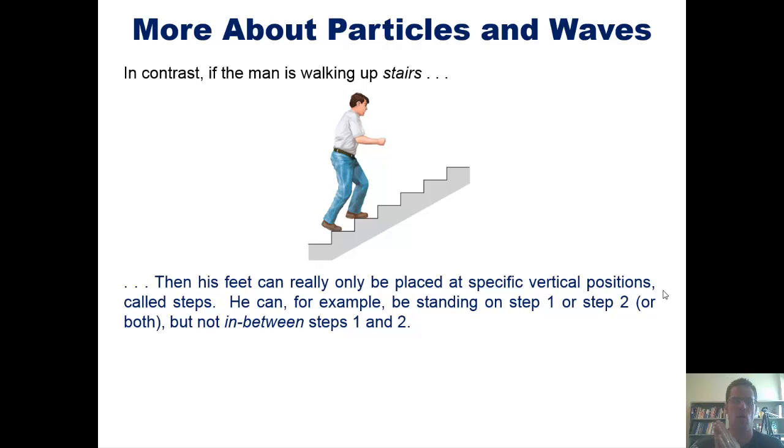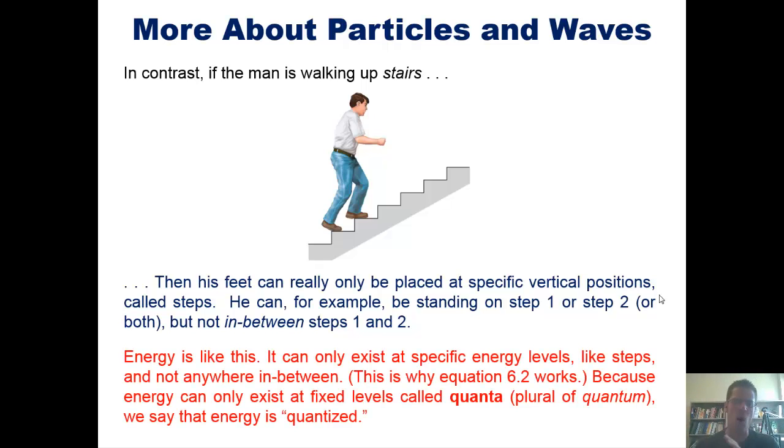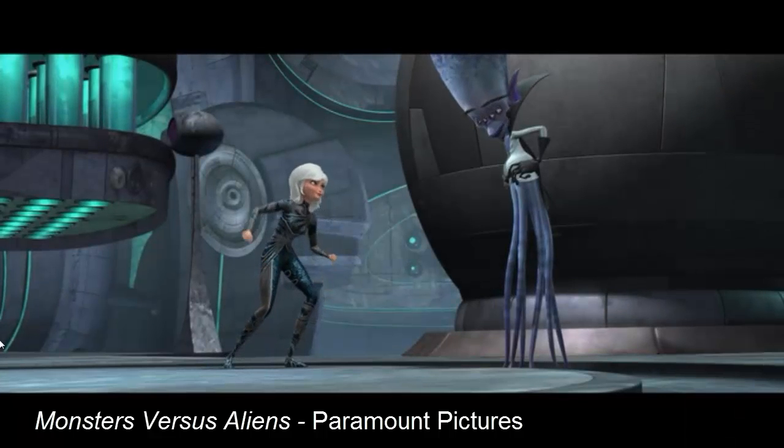So once again, that hopefully makes sense. If you're walking along a ramp, you could technically be at any vertical position, but along steps you can't be, because you can't exist at a level that's between step one or step two unless you have the ability to float or something. So energy is kind of like this. It can only exist at specific energy levels like steps and not anywhere in between. This is why equation 6.2 that I showed you before works. Now, because energy can only exist at fixed levels, which we call quanta, which is the plural of quantum, we can say that energy is quantized.